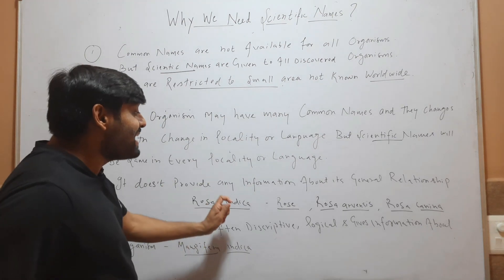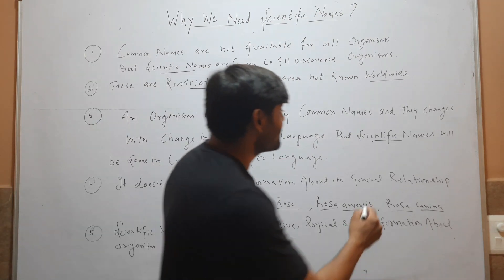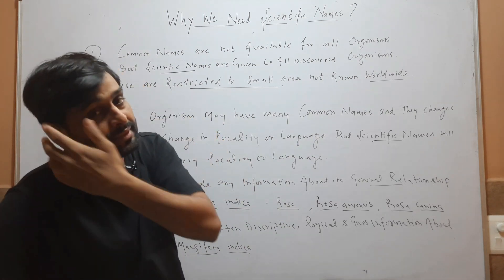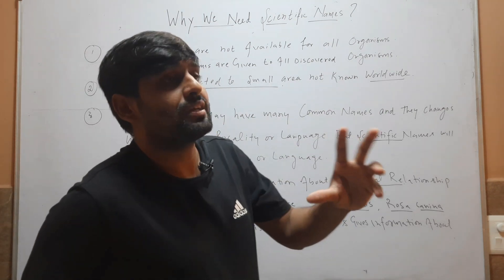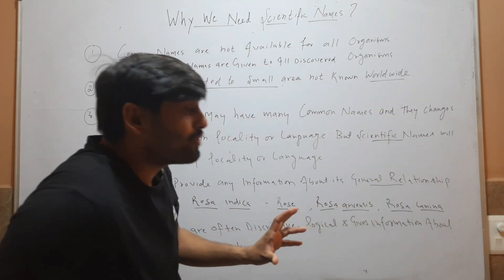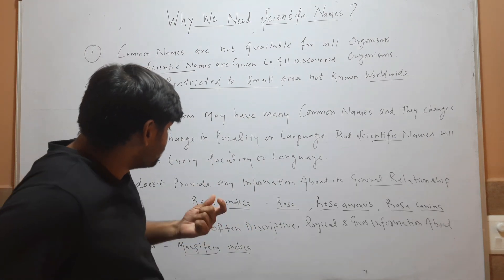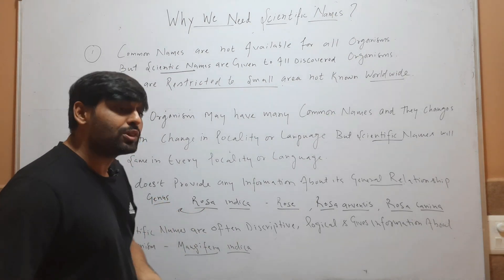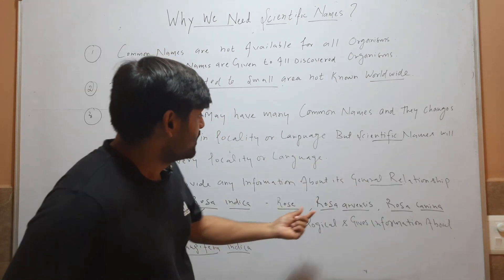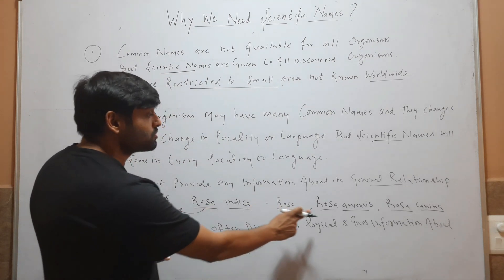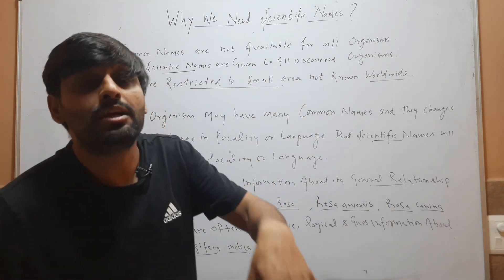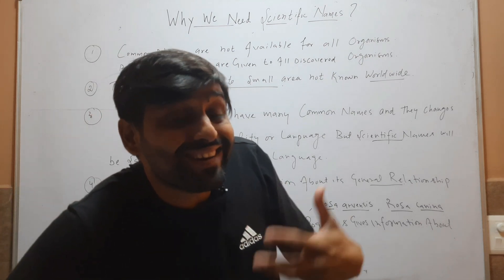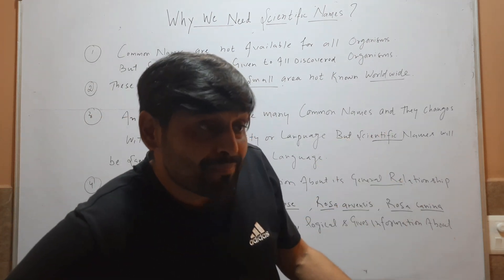The fourth reason is that common names do not provide any information about the general relationship of an organism. For example, the plant Rosa indica has the common name 'rose' in English and 'gulab' in Hindi. From the name 'rose' we can say it's some type of flower, but it does not show its general relationship with other plants. When I write Rosa indica, it shows it belongs to the Rosa genus, so it is related to all plants that have the Rosa genus — for example, Rosa arvensis and Rosa canina. These are all related plants because they share the same genus. Scientific names provide the general relationship of organisms, but common names cannot.